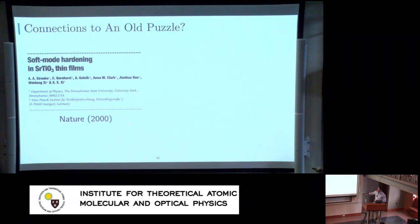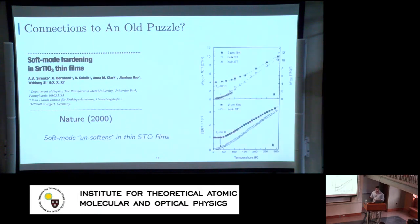Okay, I'll finish by saying that actually, there's some interesting connections to an old puzzle. In strontium titanate thin films, people wanted to make these into ultra small capacitors because of this large dielectric constant. It was thought that you could make a very efficient capacitor at very small scale, so they made very thin films.